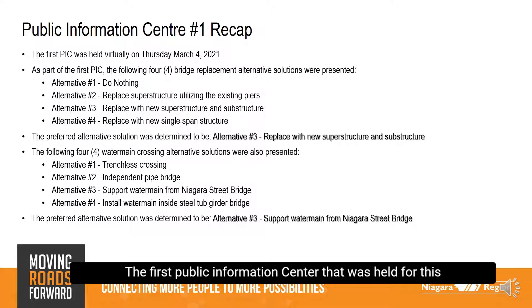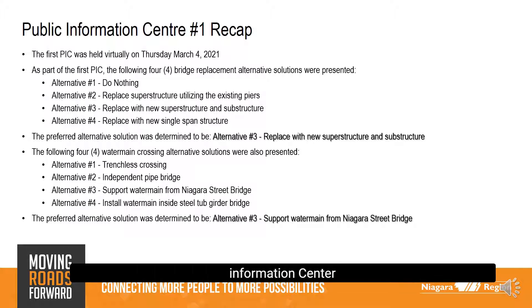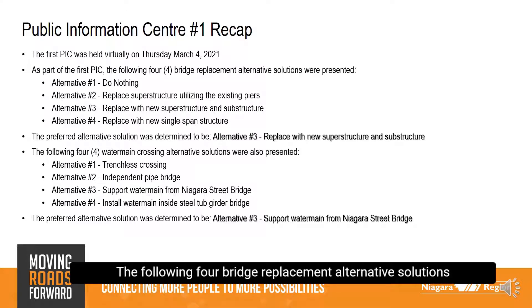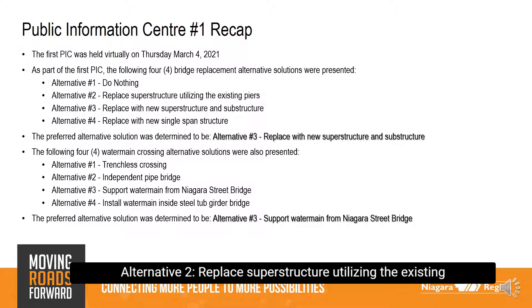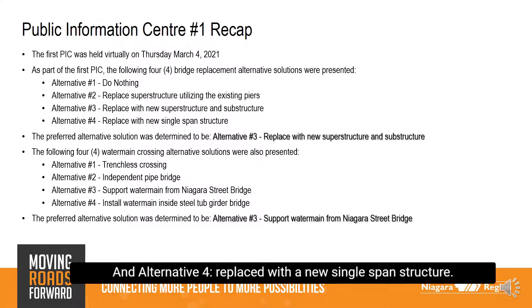The first Public Information Center for this Municipal Class Environmental Assessment study was held virtually on Thursday, March 4th, 2021. As part of the first PIC, the following four bridge replacement alternative solutions were presented: Alternative 1 – do nothing; Alternative 2 – replace superstructure utilizing the existing piers; Alternative 3 – replace with a new superstructure and substructure; and Alternative 4 – replace with a new single span structure.